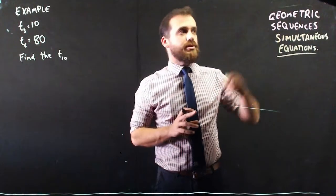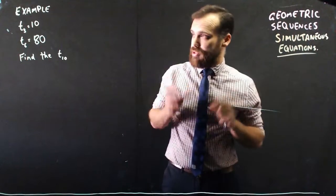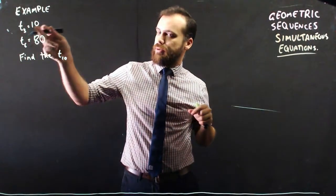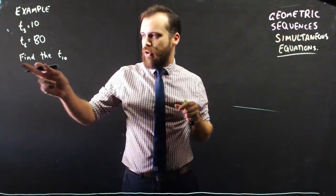You've seen this sort of thing with arithmetic sequences, geometric sequences, and simultaneous equations. For instance, if we knew that term 3 was equal to 10, and we knew that term 6 was equal to 80, we can find the 10th term.